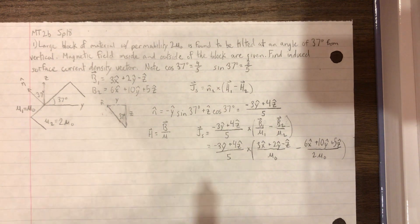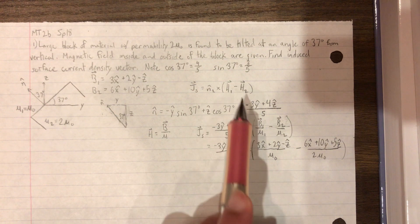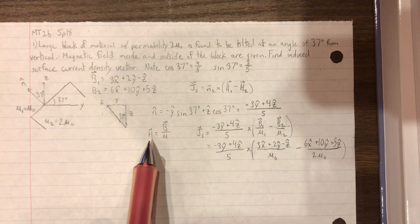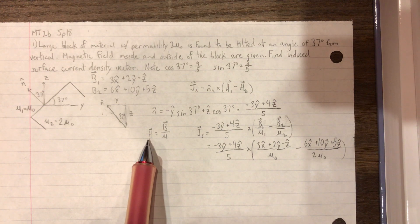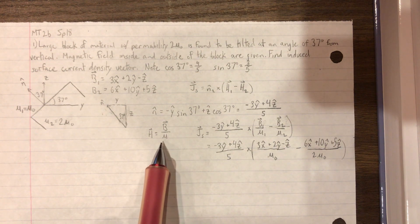So now going back to this equation, we want to find our H1 and H2. But to find that, we need to use this equation. So H equals B over mu.